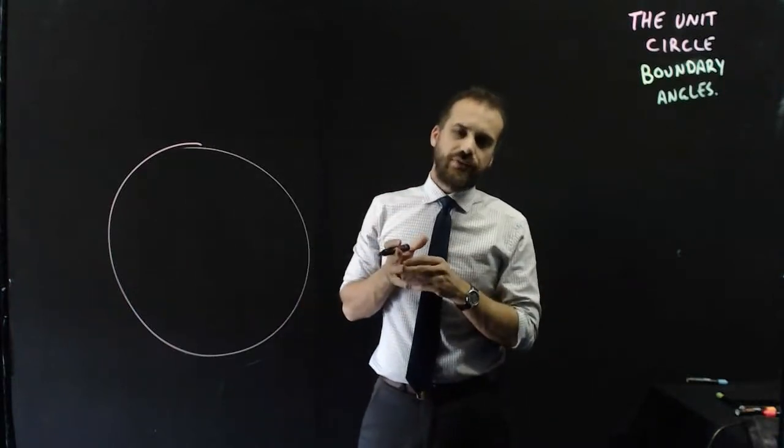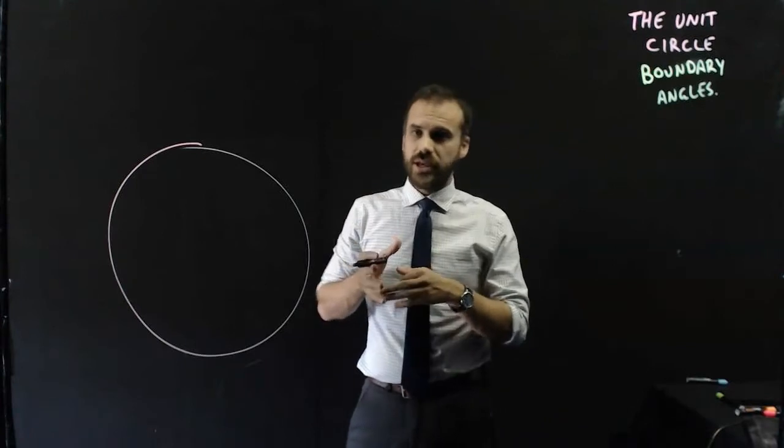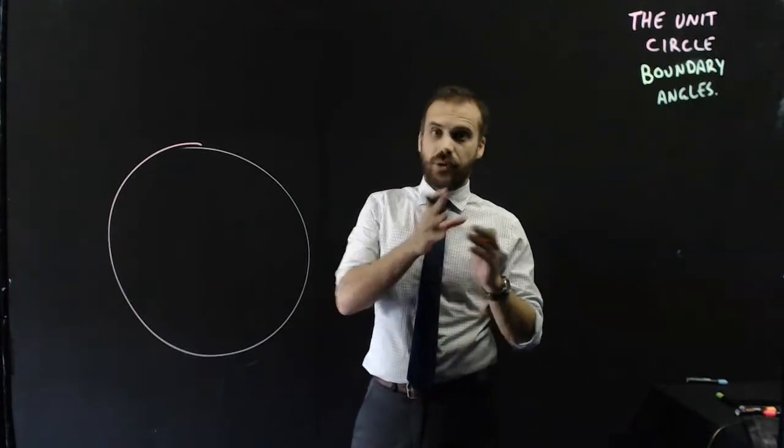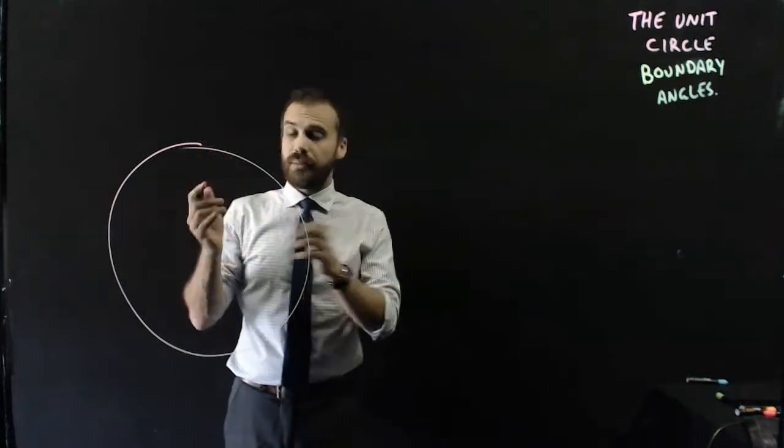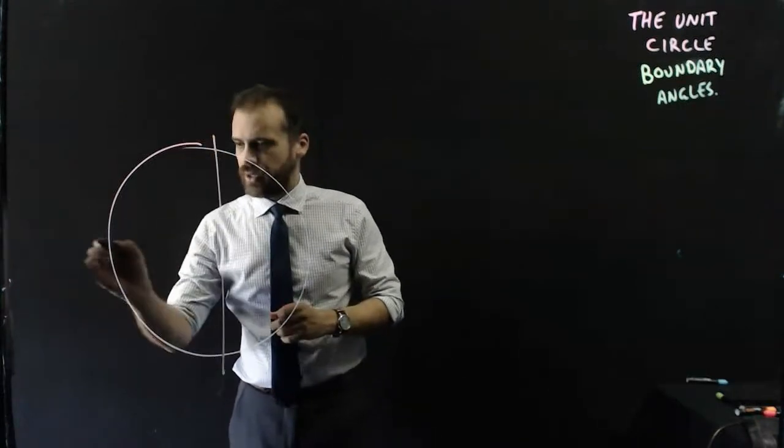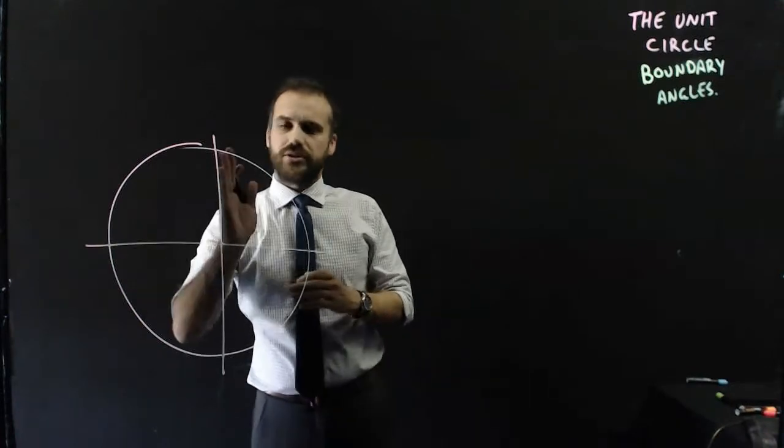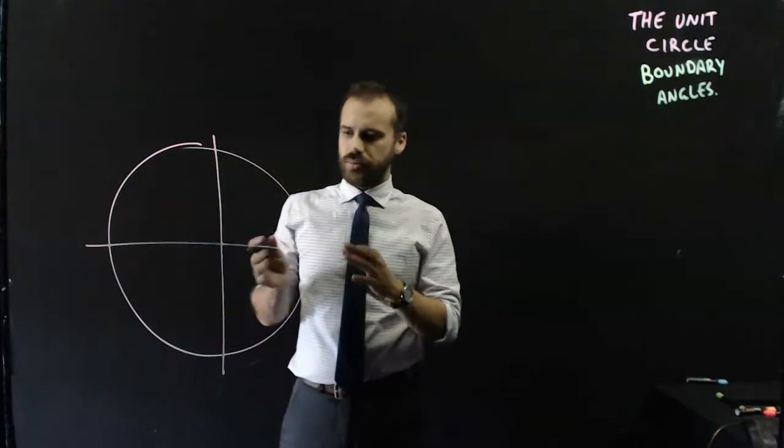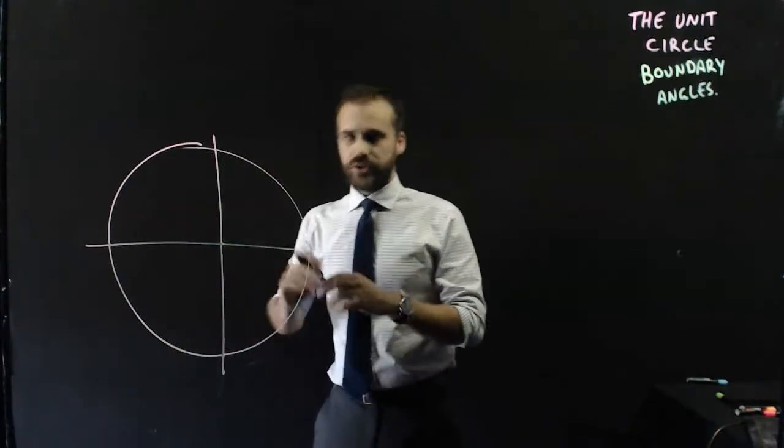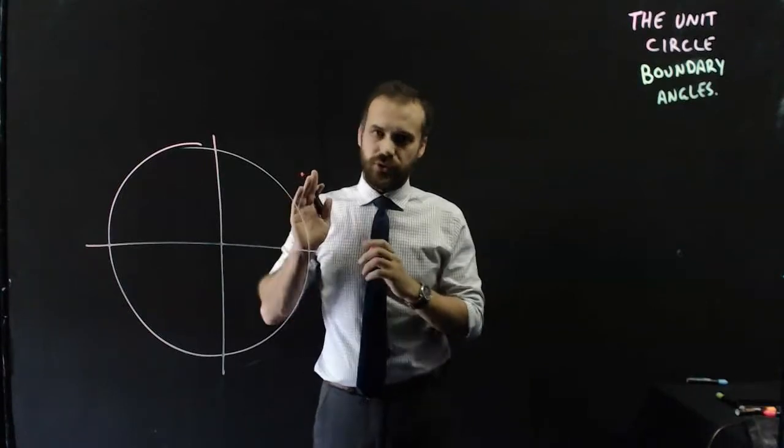Well, you already know the exact values of things like sine pi on 4, cosine pi on 6, tan pi on 3. What you don't know, or what you do know but maybe you don't realize you know, is what about cosine 90 degrees? What about sine 180 degrees? What about tan 270 degrees? So we're going to walk through all of those.